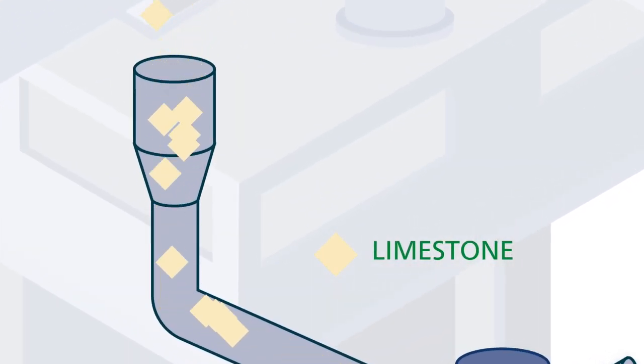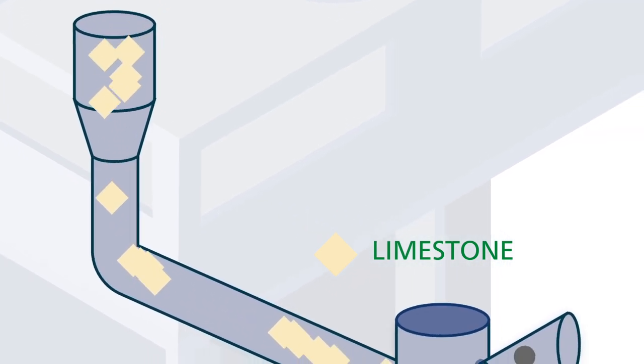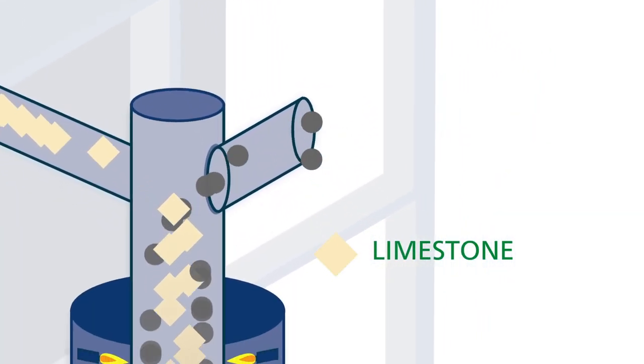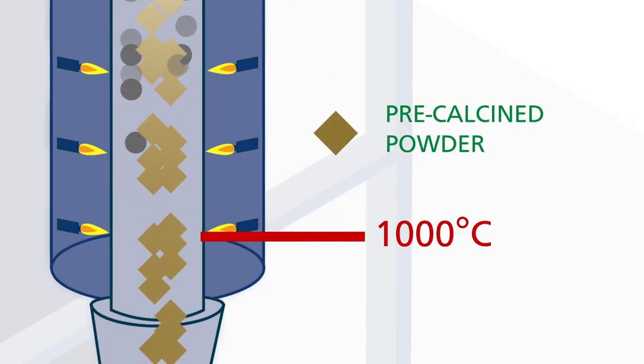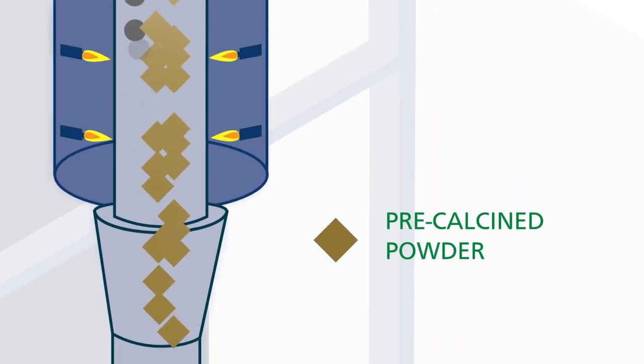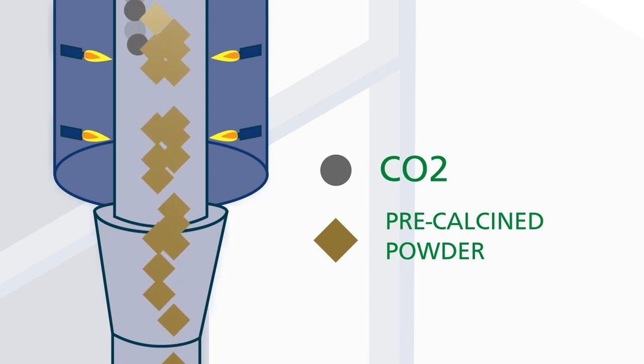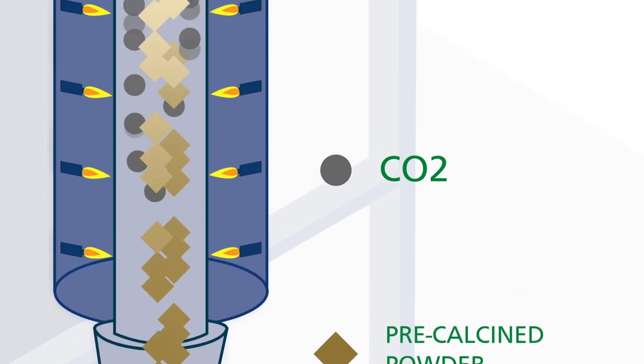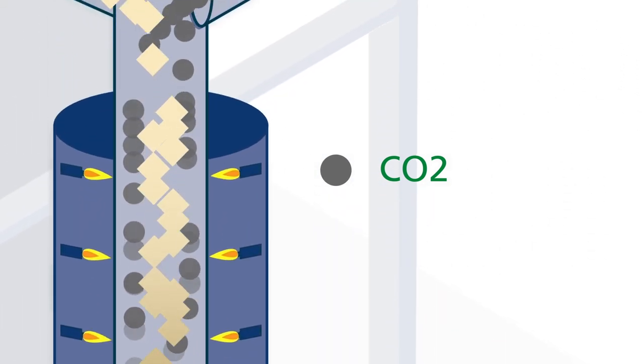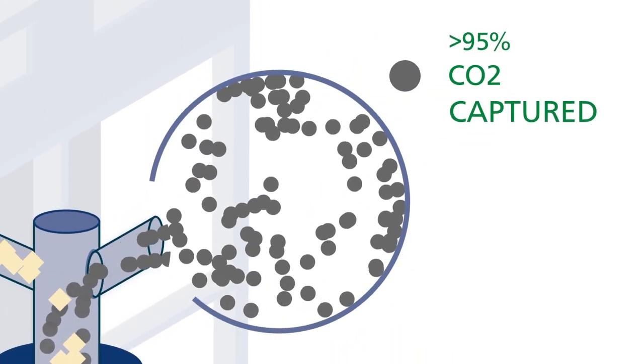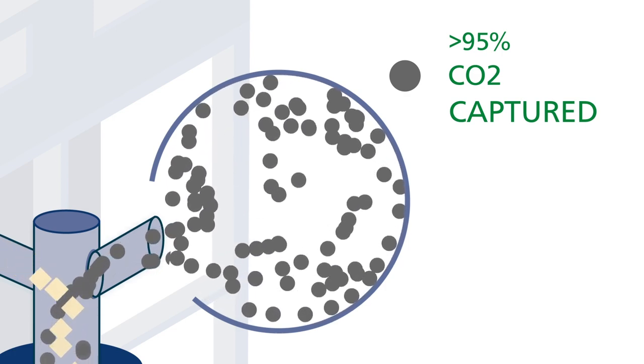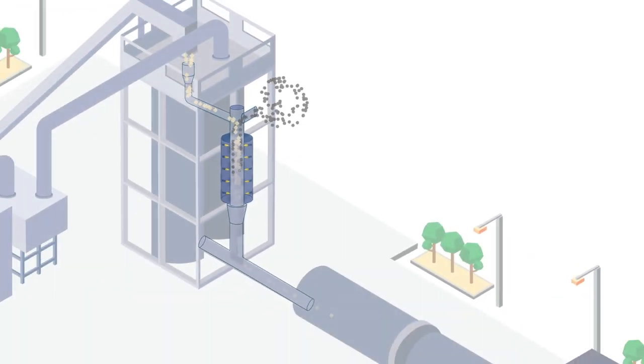For the direct separation process the limestone is slowly poured into this high temperature reactor, which is heated to about 1000 degrees. It immediately splits into lime powder and carbon dioxide. The separated CO2 is not mixed with the flue gas of the combustion process and is therefore more than 95% pure. This means it can be captured and used right after the cooling process.